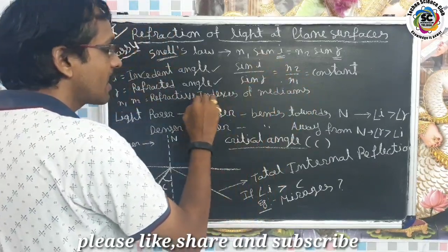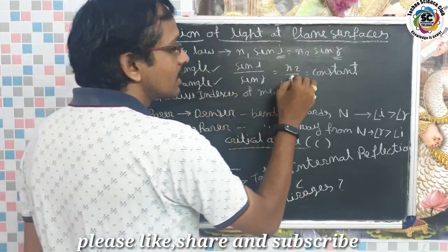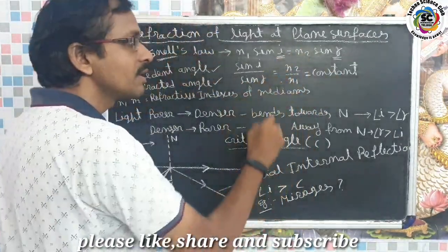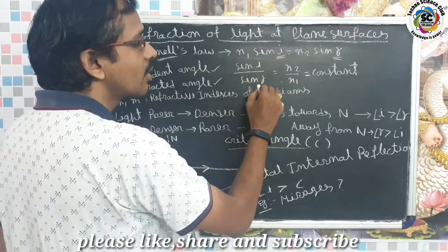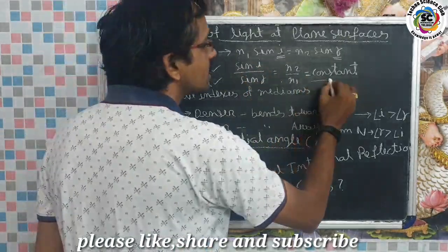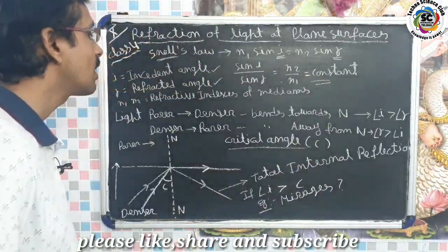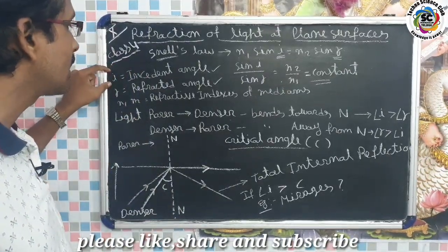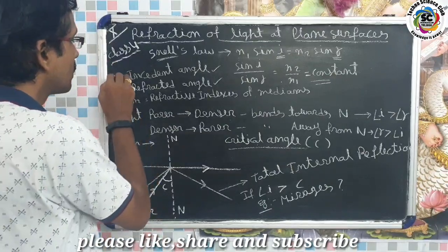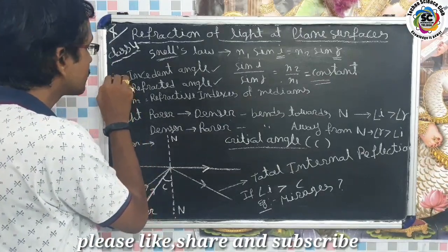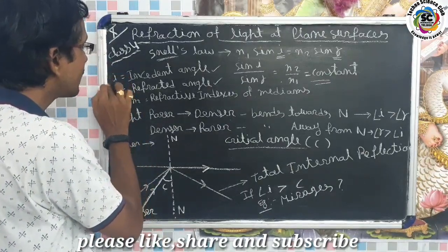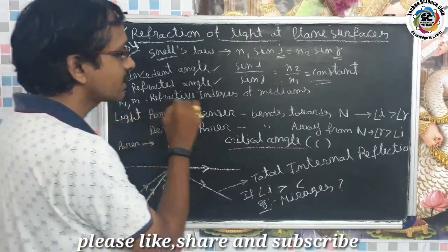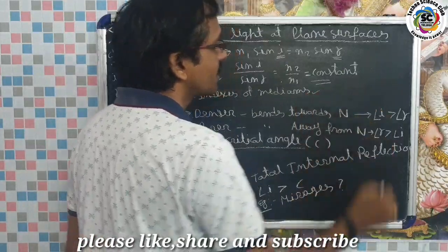Whether the refractive indexes are the same or different, sin(i) / sin(r) is always equal to a constant. This is Snell's law. In this formula, i is the incident angle, r is the refracted angle, and n1 and n2 are the refractive indexes of the two different mediums.